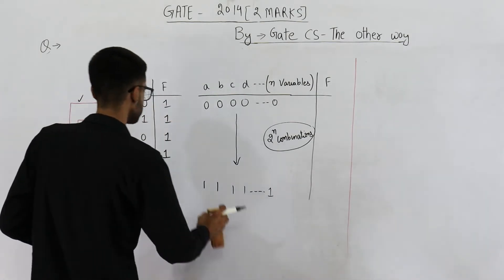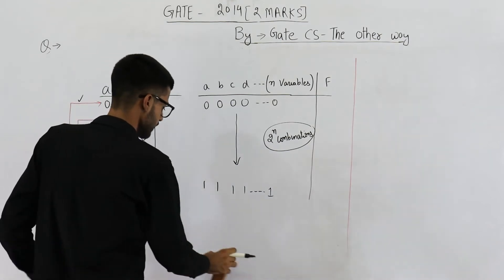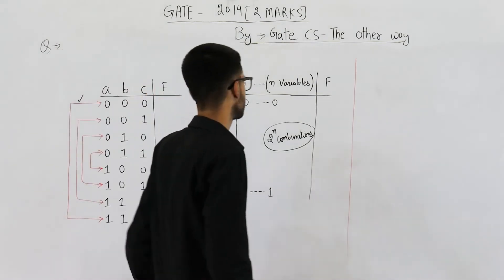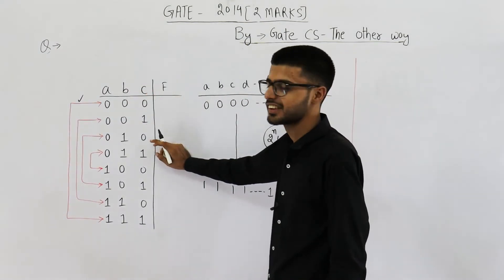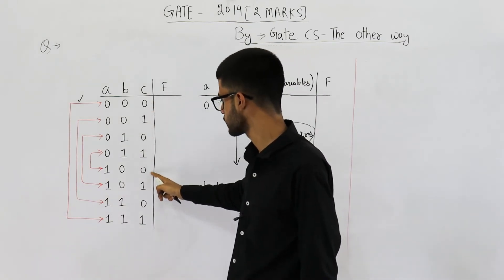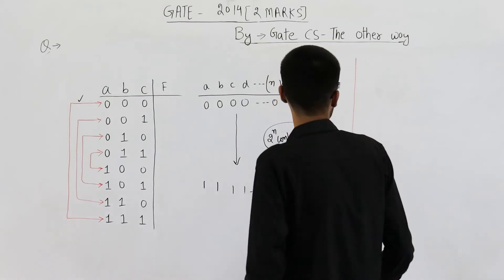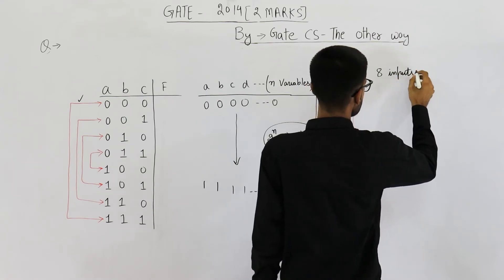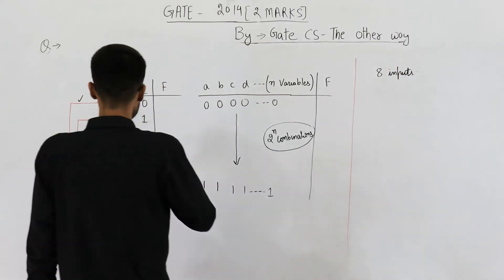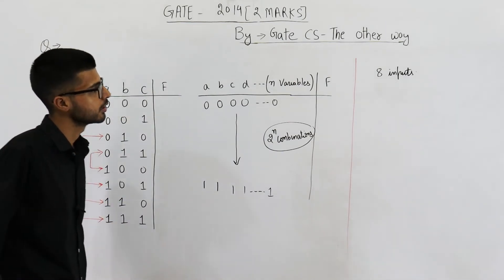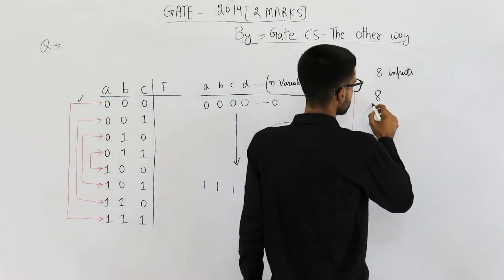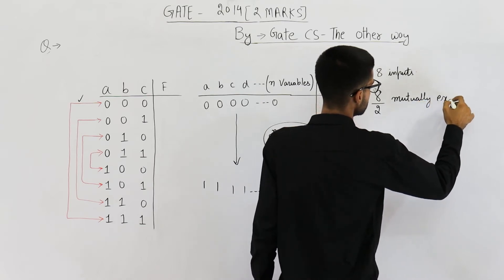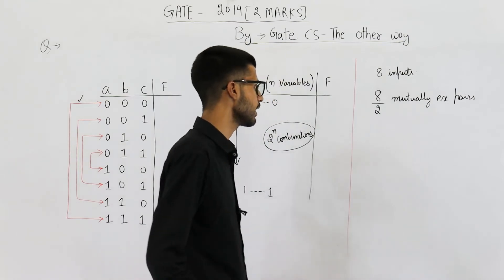Now let's find the number of self-dual functions possible on n variables. Let us take n = 3. With three variables, the total number of inputs possible are eight, that is 2 raised to the power 3. When you try to form pairs of these inputs, you will get 8 divided by 2, which gives four mutually exclusive pairs.